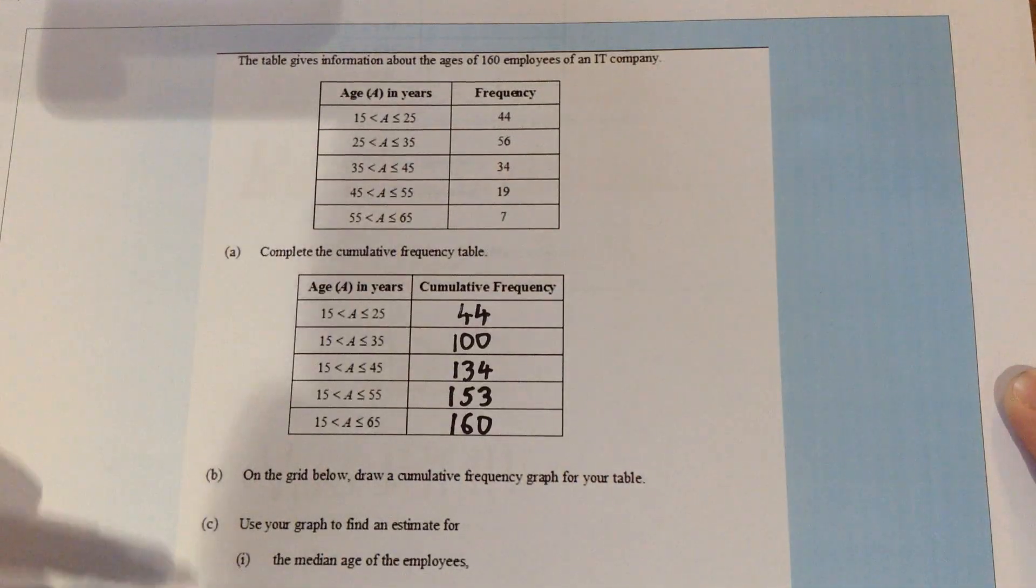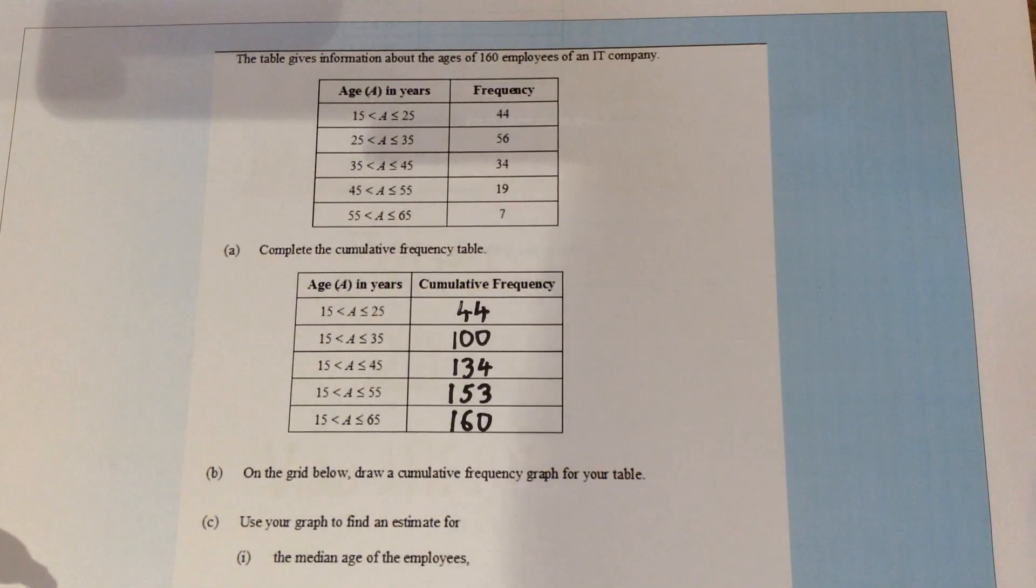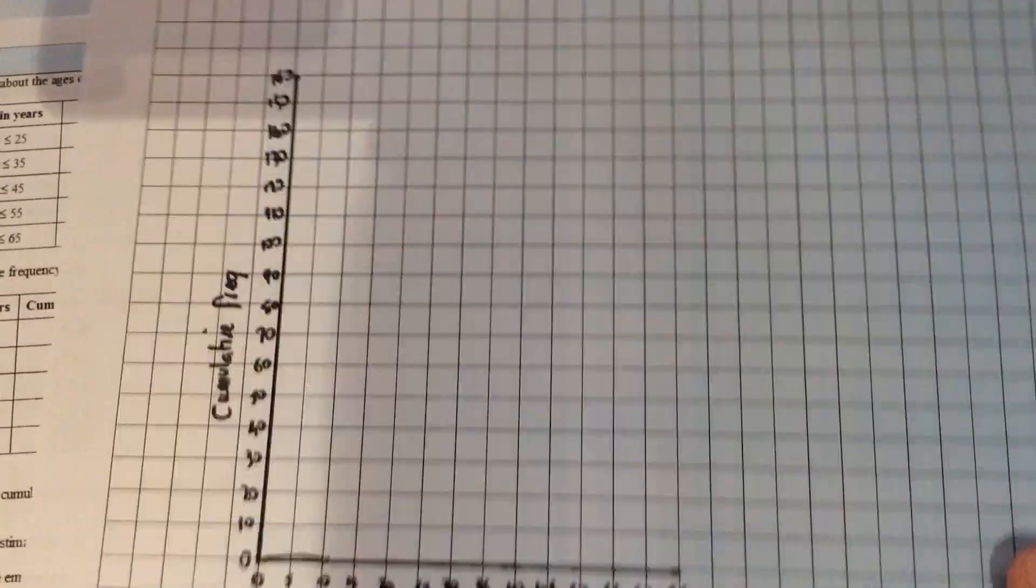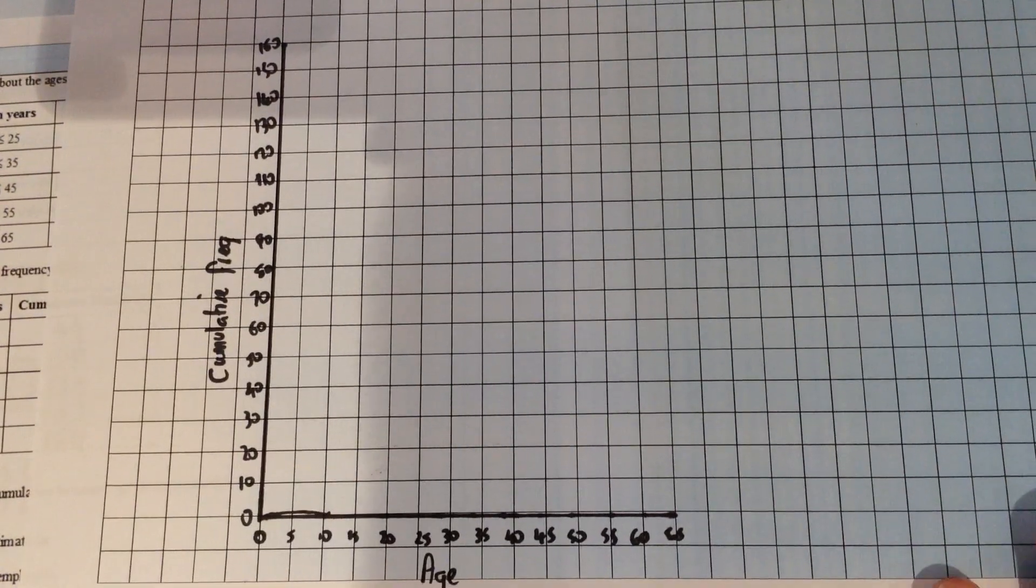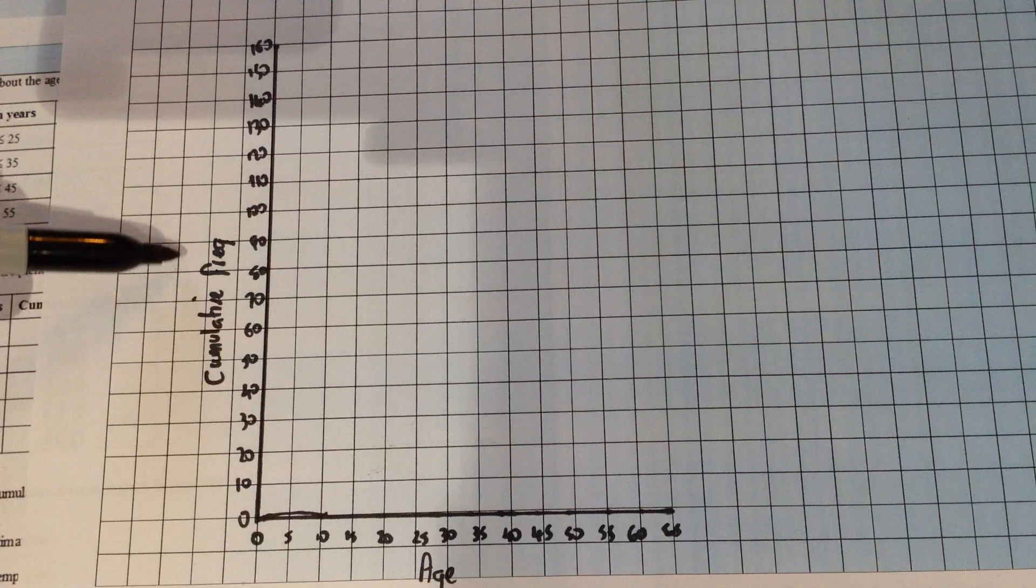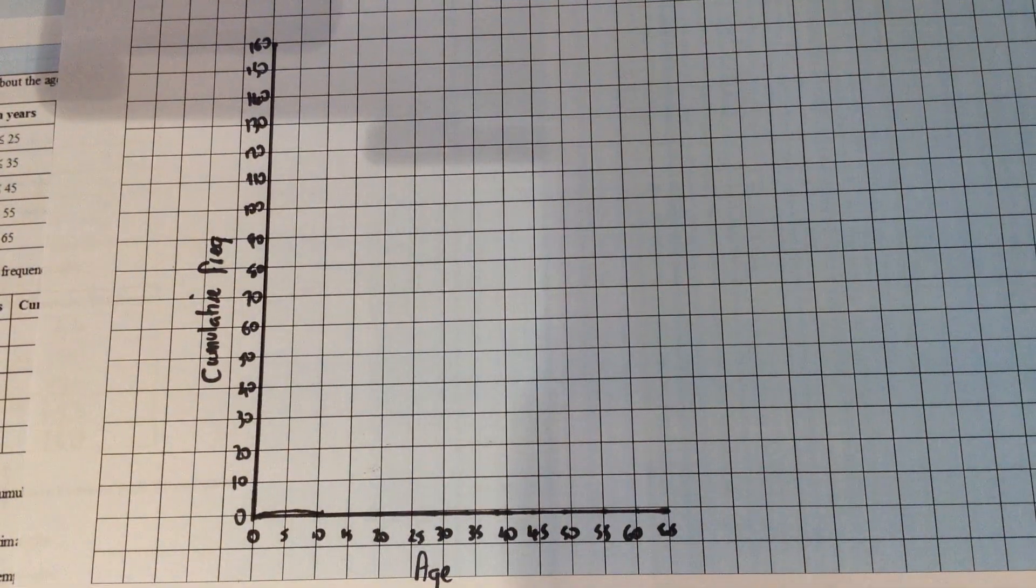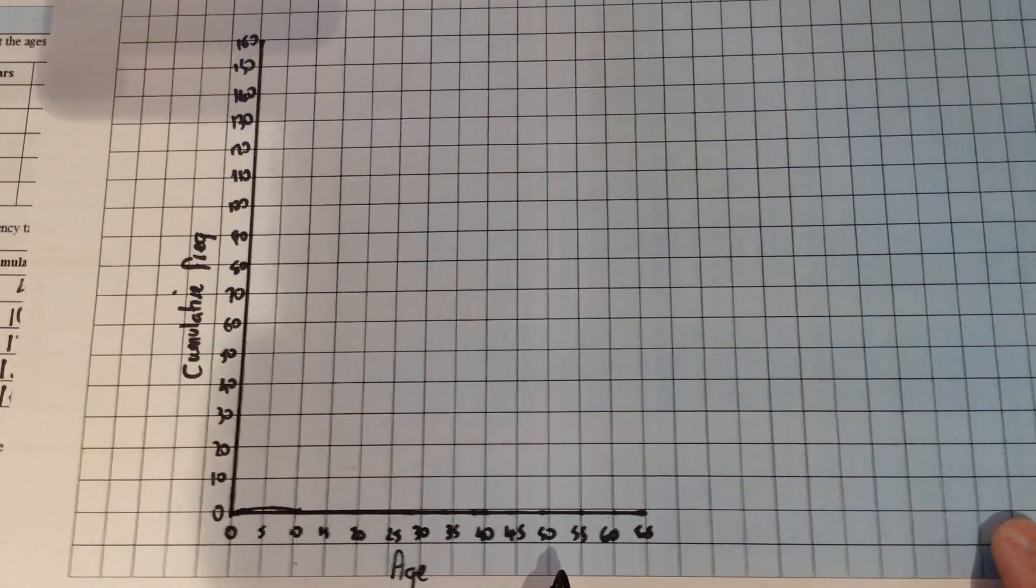Before we can do any of the questions below to do with median or interquartile range, we actually need to draw the graph. In an exam you will normally be given this pre-drawn, but just in case, cumulative frequency goes up the side, so this needs to go up as high as the cumulative frequency column of the table we just used, and along the bottom we would need the ages.